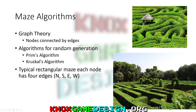If you're working with a rectangular maze, it can be broken down to a set of nodes with four edges for each node — one for the node above it, below it, to the left, and to the right, or north, south, east, and west.